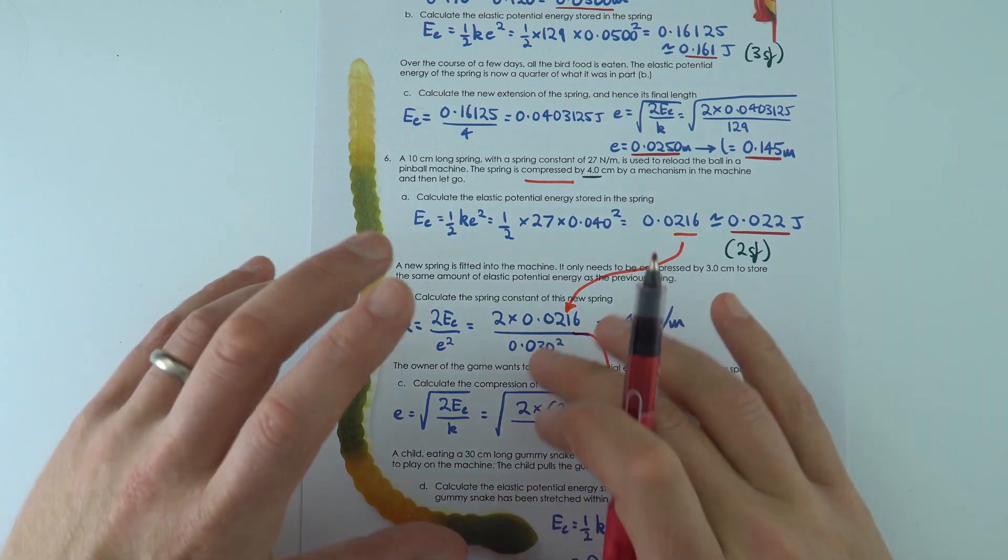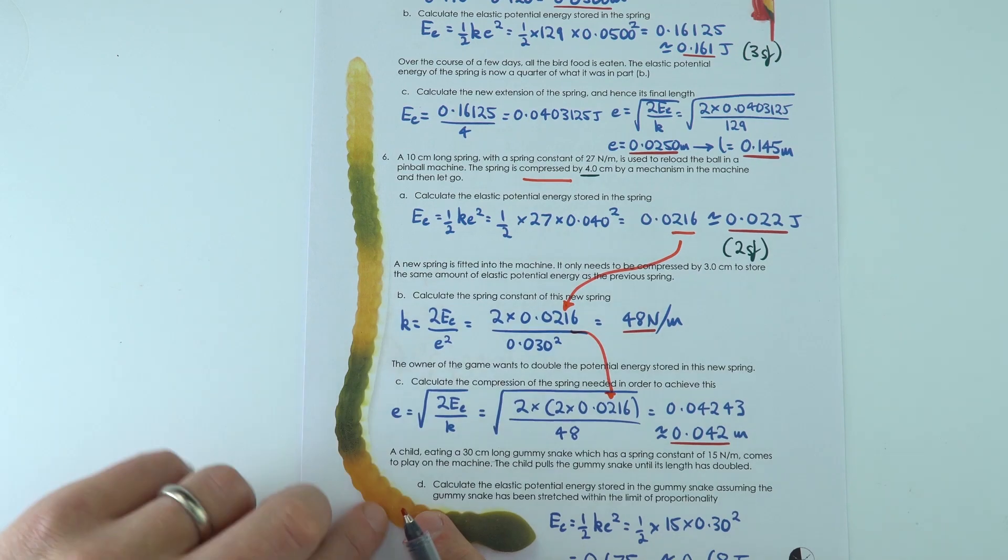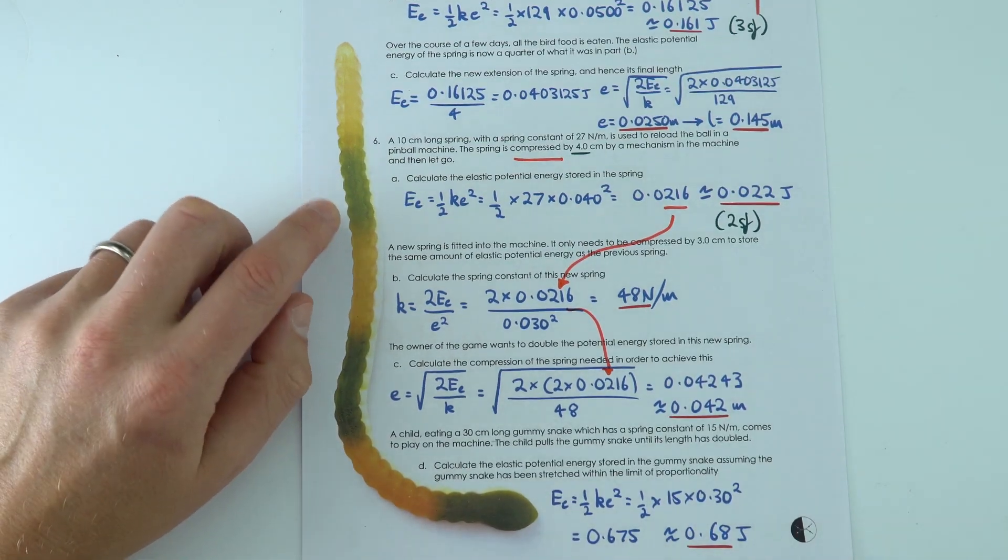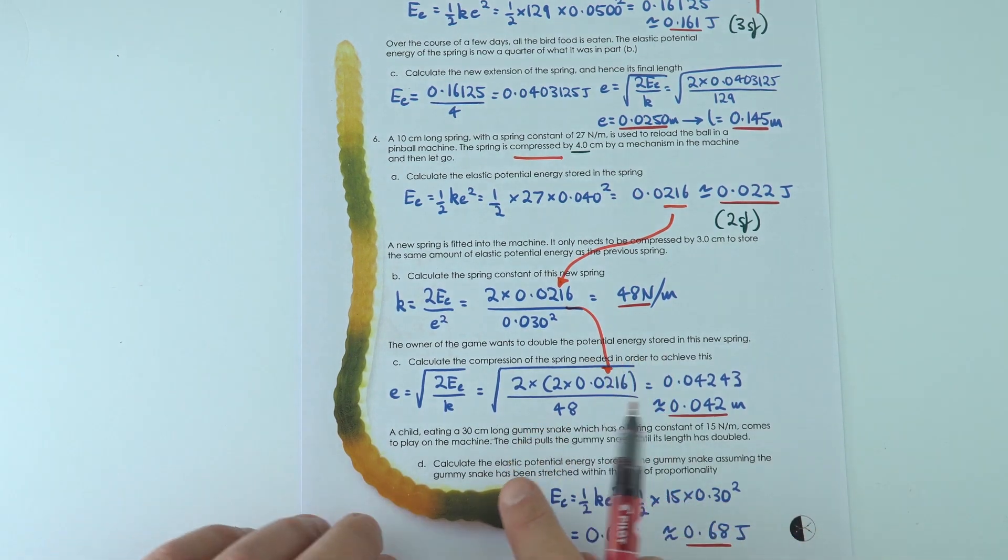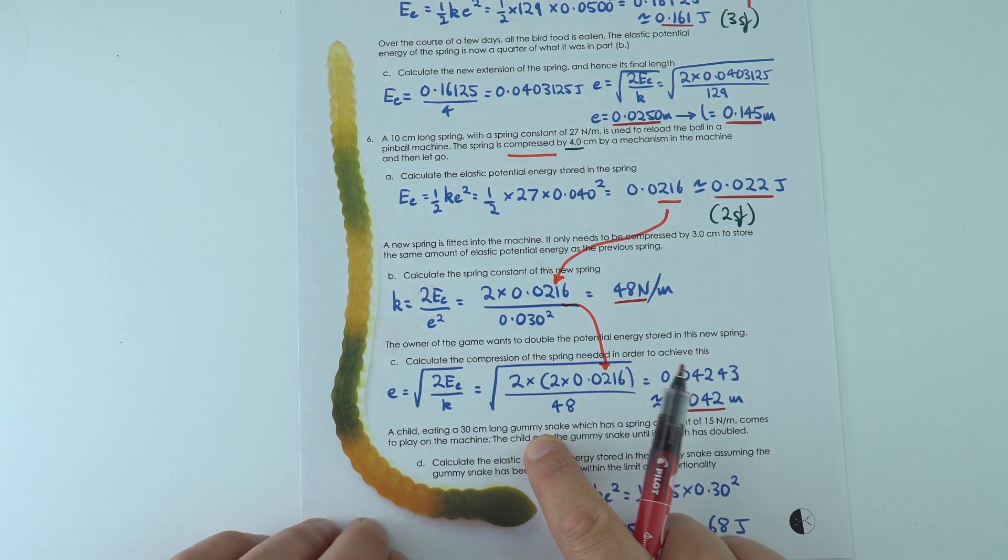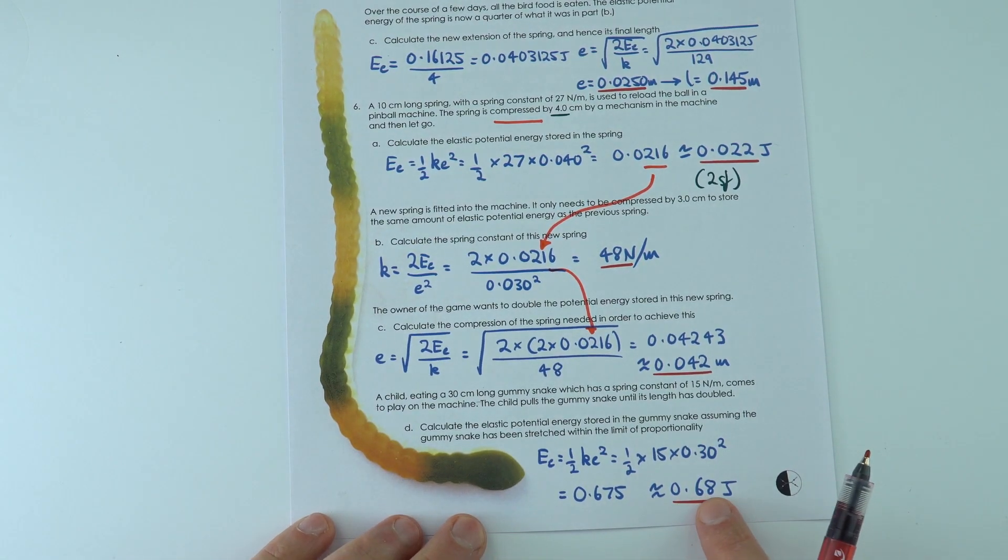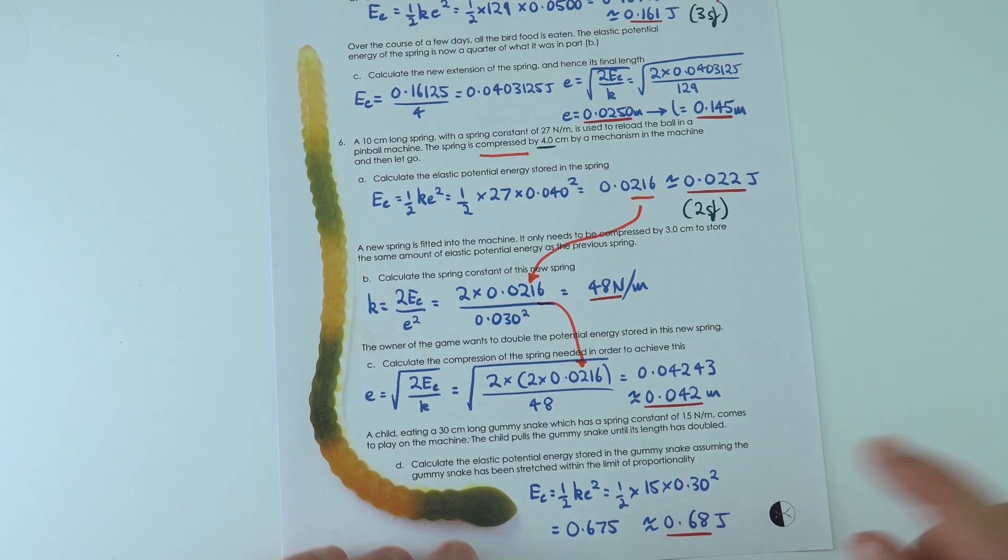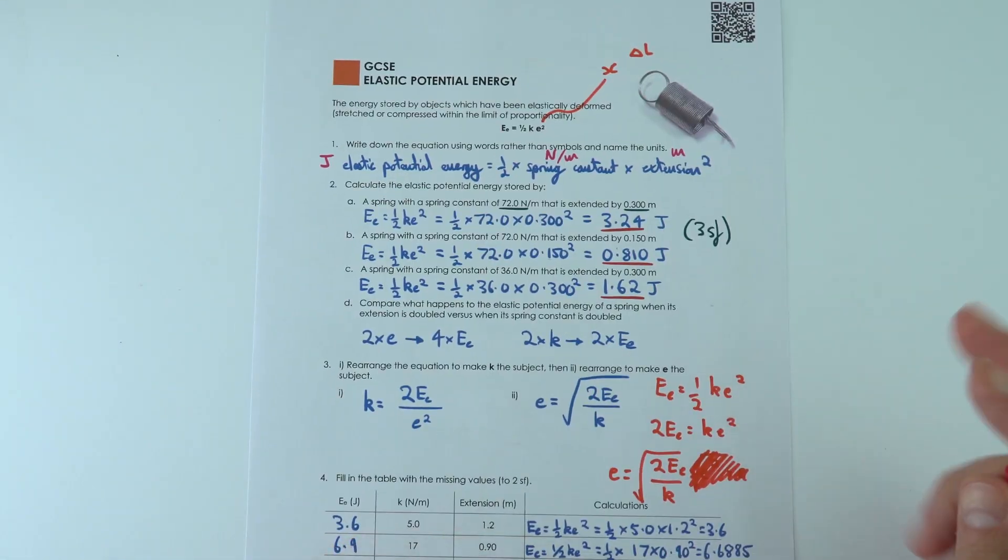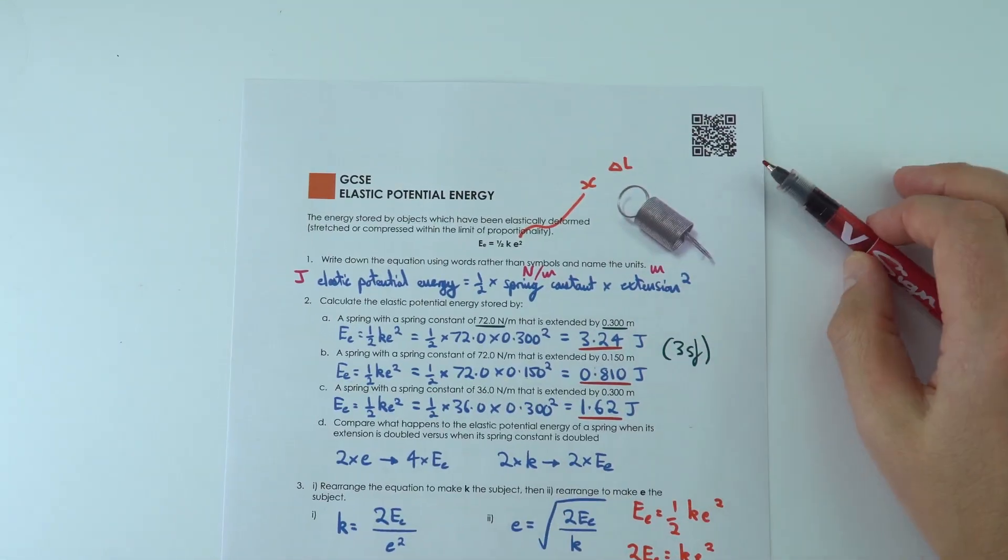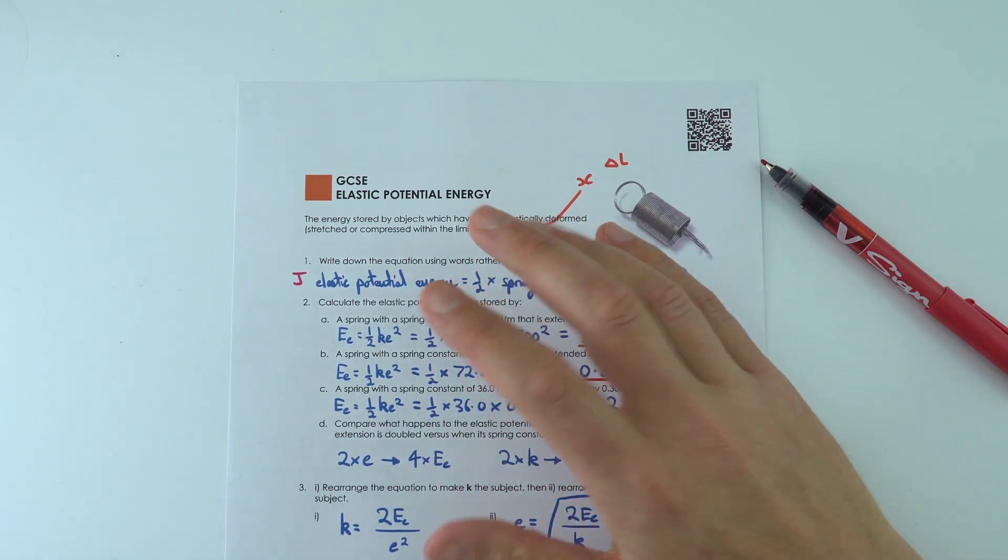And finally, we're not just dealing with springs the whole time. We're going to approximate this, the behavior of a jelly worm or a jelly snake, or a gummy snake sorry. We're going to say that behaves a bit like a spring. And if it's pulled to twice its original length, it then stores 0.68 joules of energy. So that one there hopefully made sense. So that's looking at elastic potential energy, and I've got another worksheet about springs that will also be really really useful for you to have a go at.